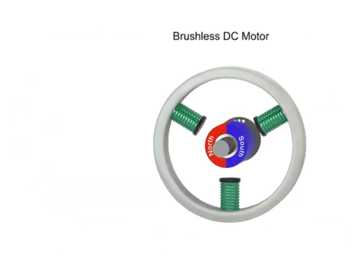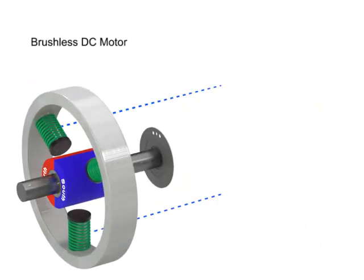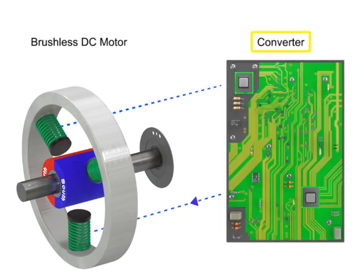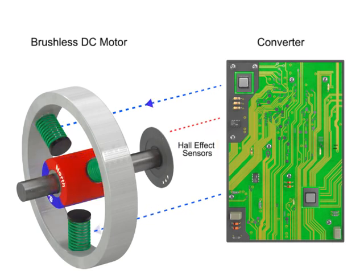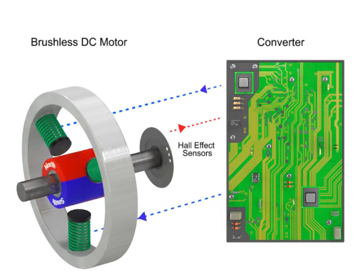A rotating magnetic field is formed by electrical pulses generated by a converter. As the rotor turns, a rotor position sensor provides feedback to the converter so the required stator field rotational sequence is maintained. The change in sensor state reports back to the converter, which continually switches the phase to the windings to keep the motor turning.